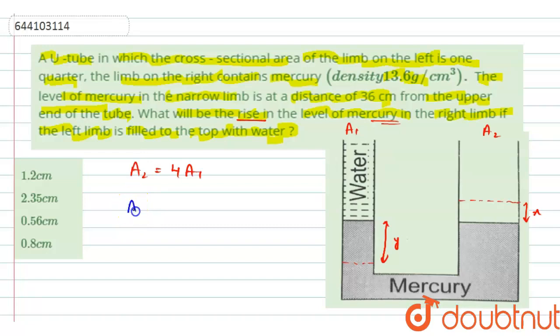So if I equate the volumes of the mercury, I would get A1 into y, this is the volume of mercury in the left limb, and this must be equal to A2 into x.